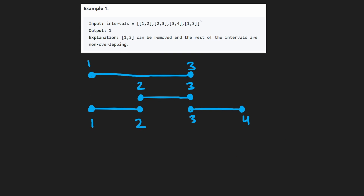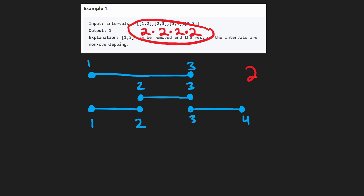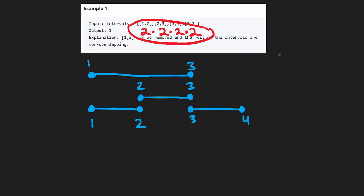One possible approach is brute force: go through every single combination. For every interval we can choose to remove it or keep it, and if we have two choices for every single interval, the time complexity is two times two times two — basically two to the power of n where n is the size of the input. That's obviously not very efficient, but we can definitely do better.